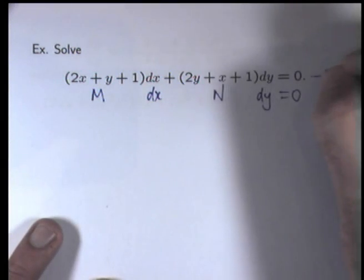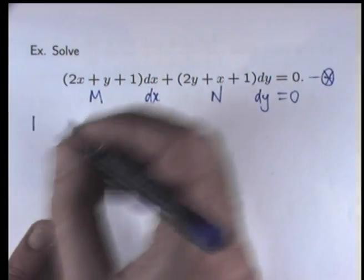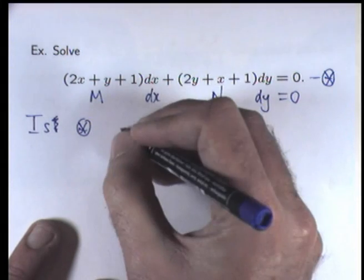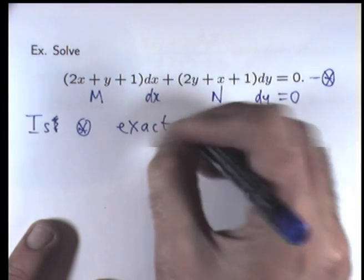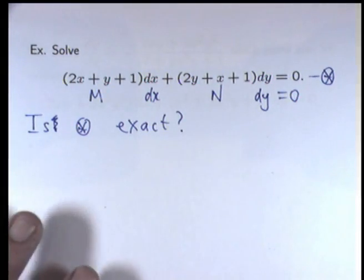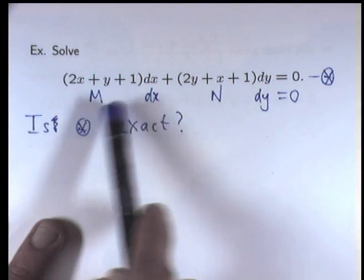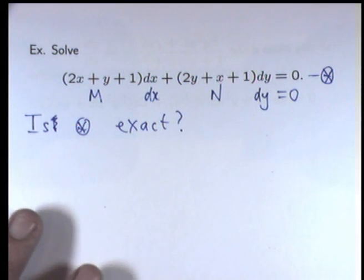Now, the first thing we need to do is to actually test the equation to see if it really is exact. If it is exact, then the previous methods will go through. So, let's remember our test for exactness. So, I'm going to label this star. And the important question is, is star exact? In other words, does m sub y or dm dy equal n sub x dn dx?